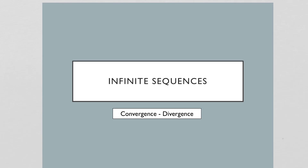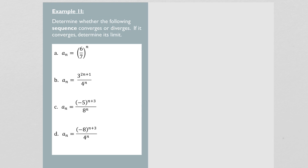Hi students. Let's continue working some examples of convergence and divergence with infinite sequences. Specifically, I want to take a look at when we have sequences where the nth term is actually an exponential function. So here we go with example two, which says let's determine whether the following sequences converge or diverge, and if the sequence converges, we want to find the limit.